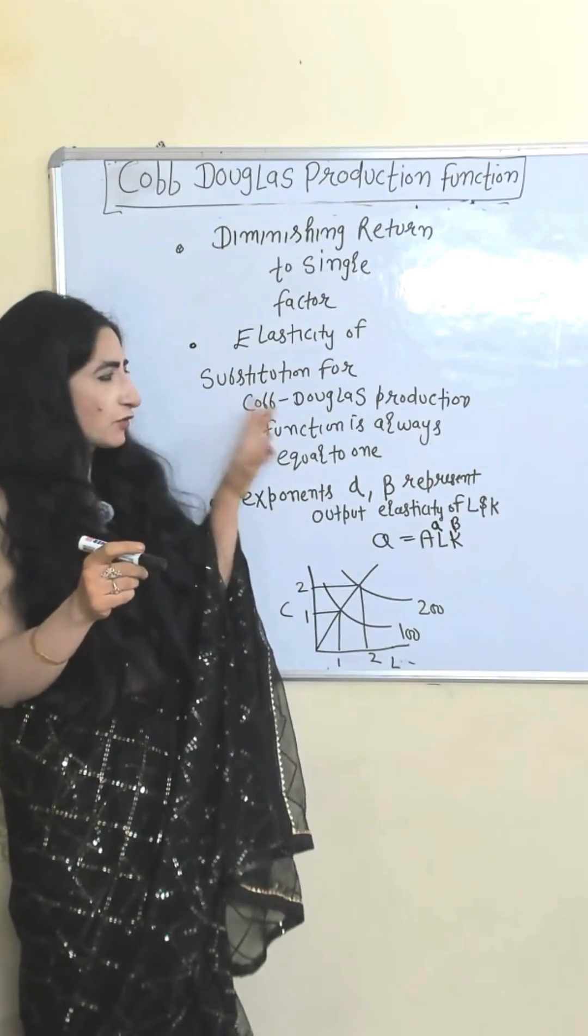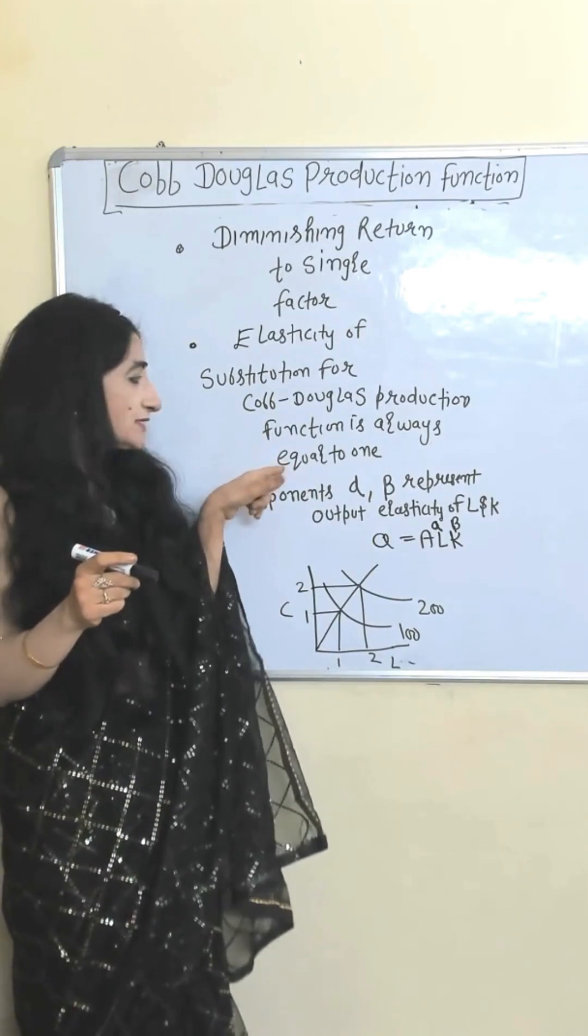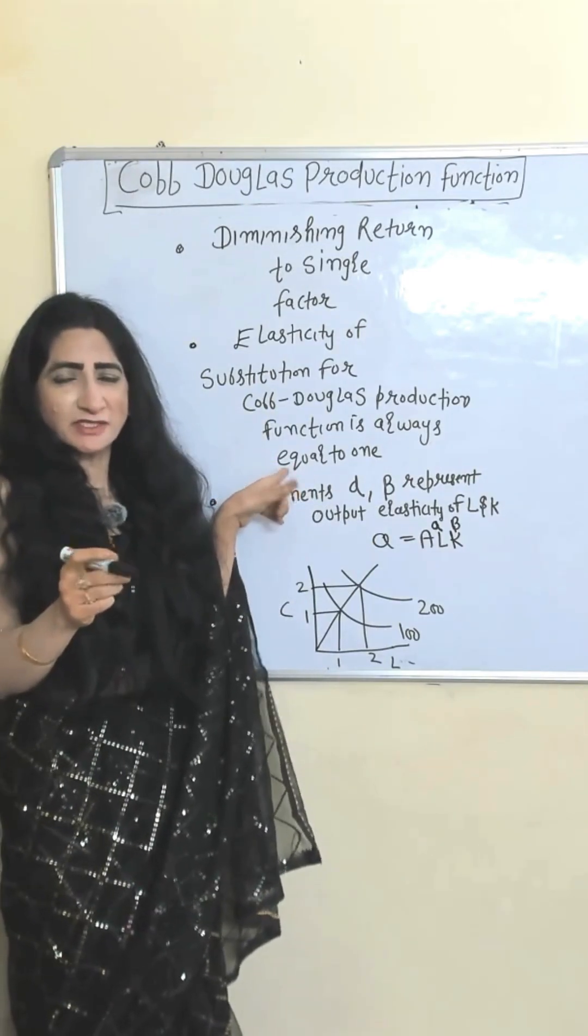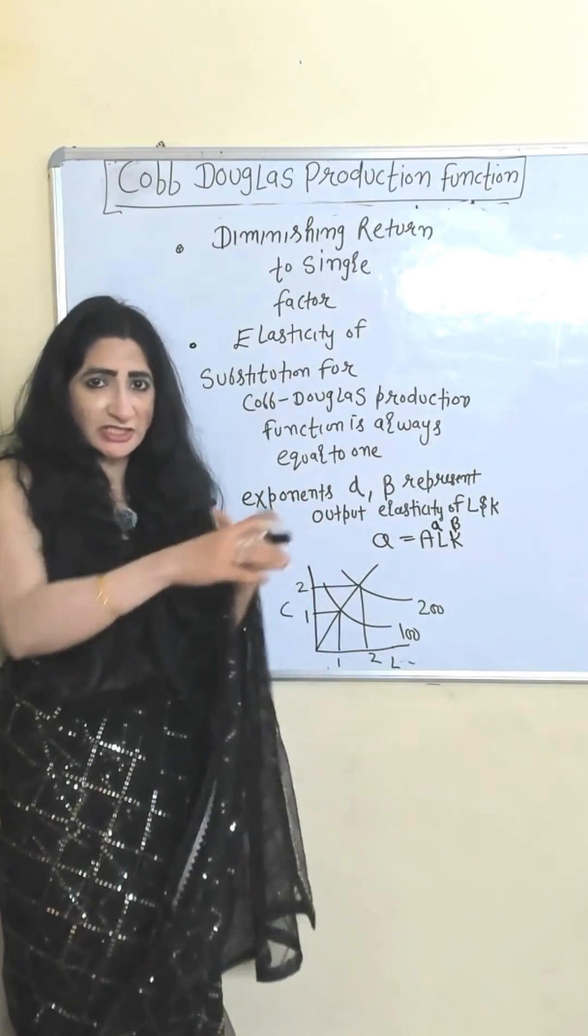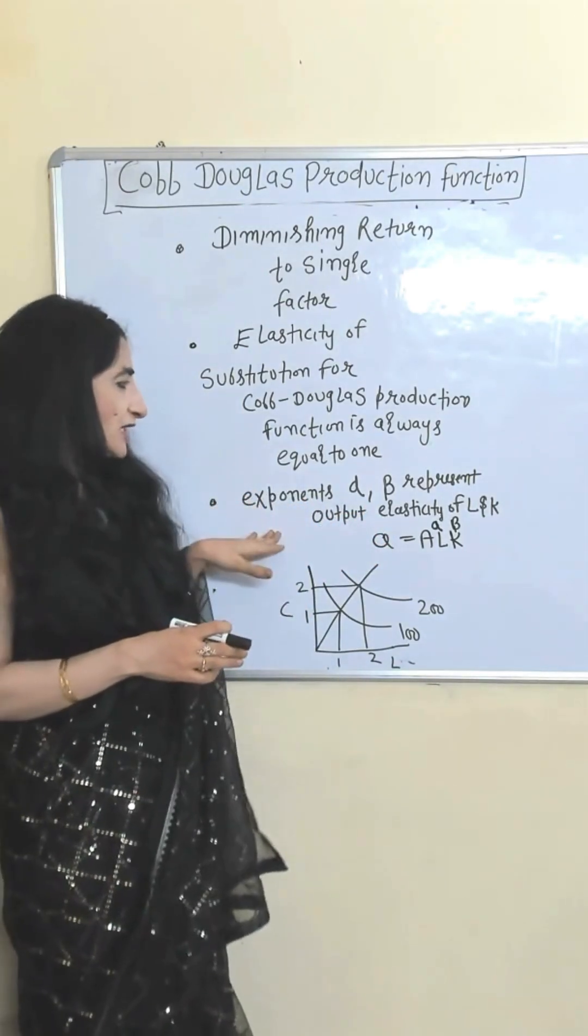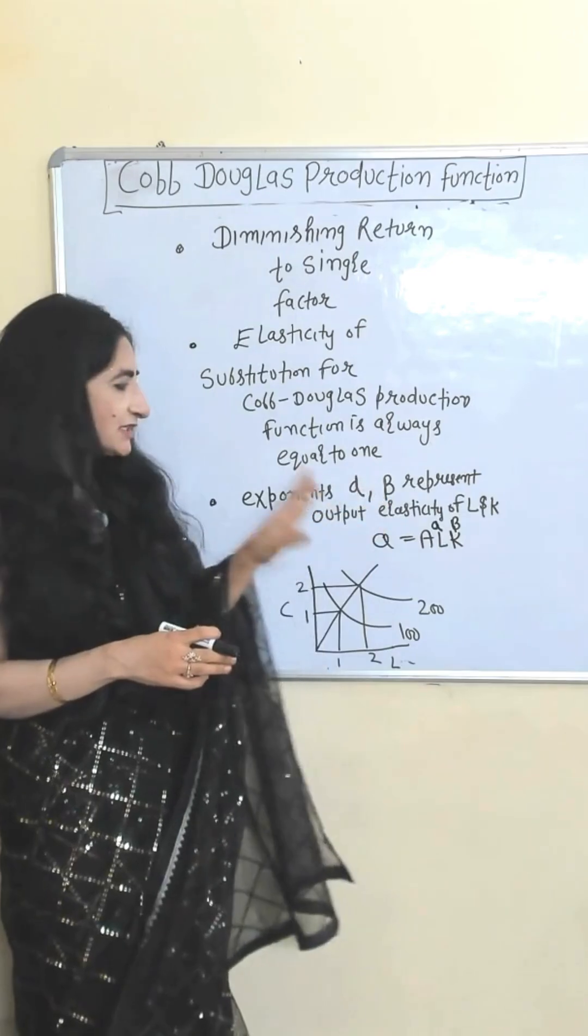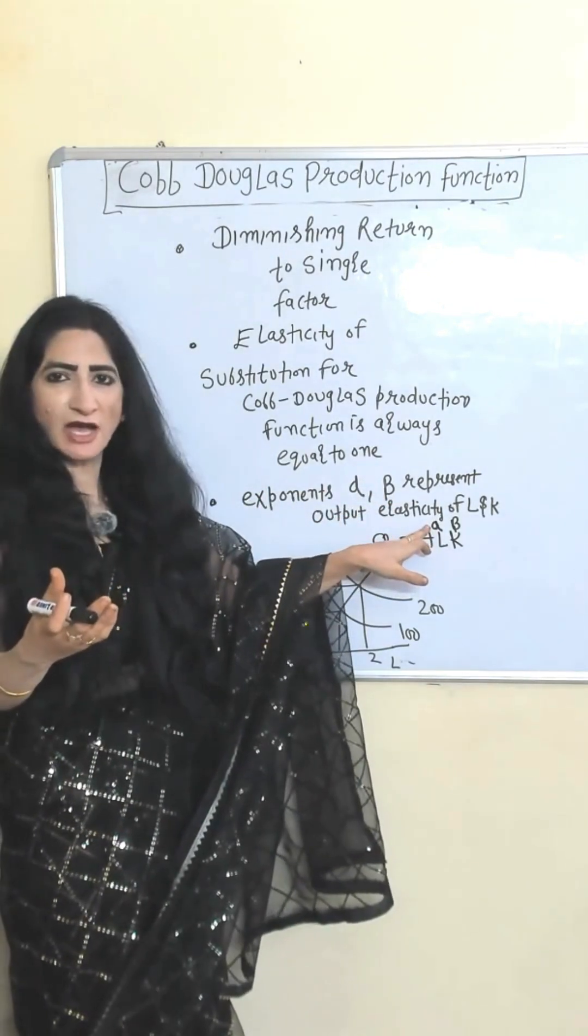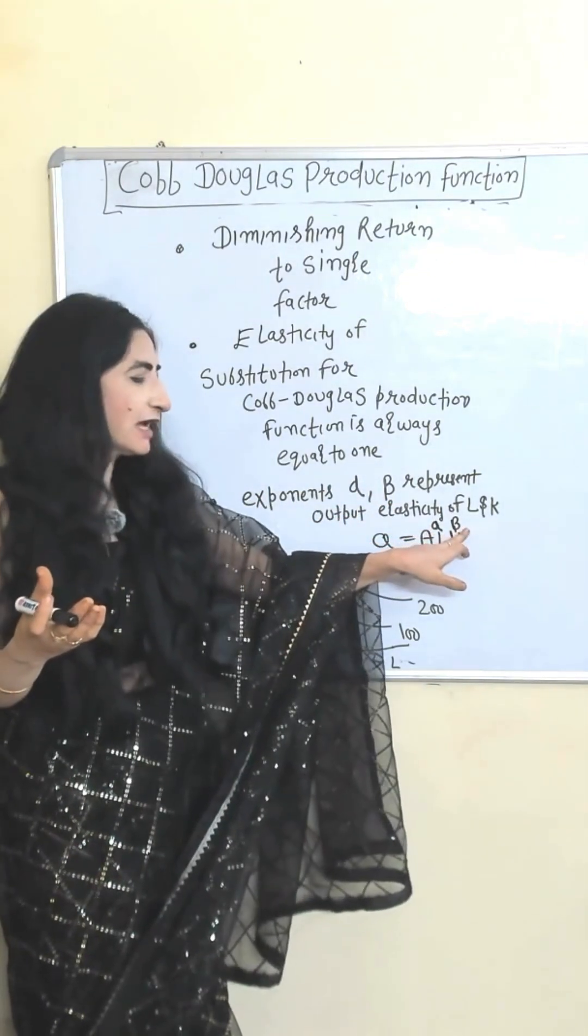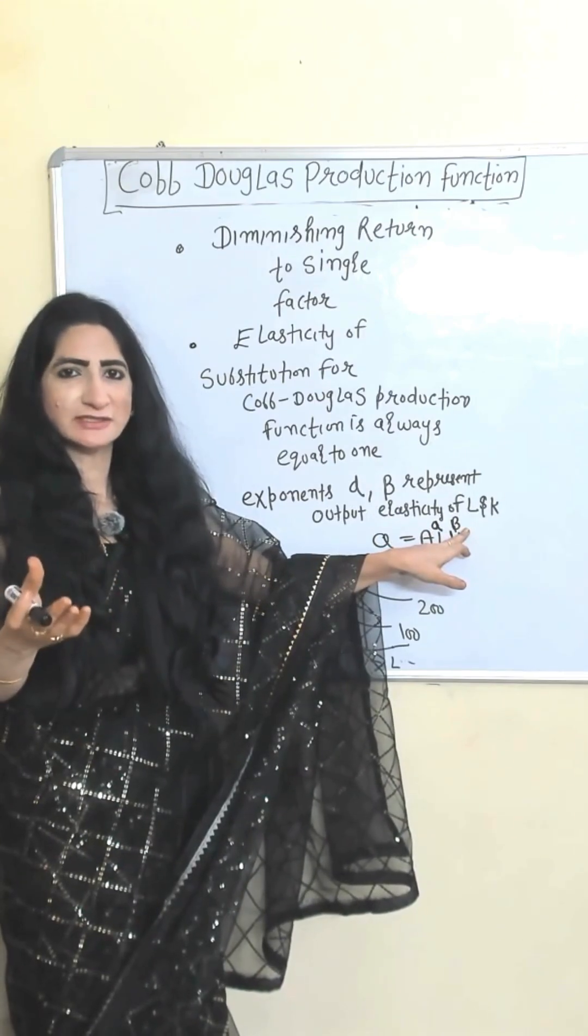Elasticity of substitution for Cobb-Douglas production function is always equal to 1. That means you can substitute both input capital and labor with each other at constant rate. Exponent like alpha and beta shows output elasticity. For example, alpha shows output elasticity for labor and beta shows output elasticity for capital.